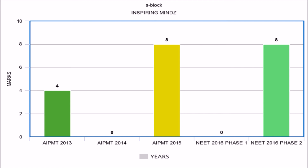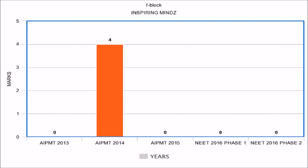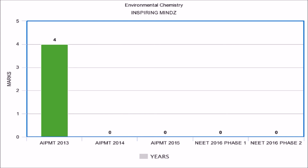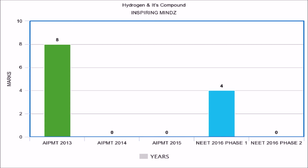For F block elements, in AIPMT 2014 four marks of questions were asked, while in all other years no questions were asked. For environmental chemistry, in AIPMT 2013 four marks of questions were asked, while in all other years no questions were asked from this chapter.